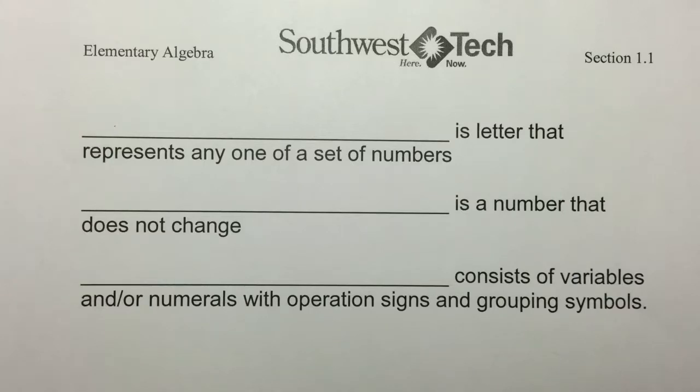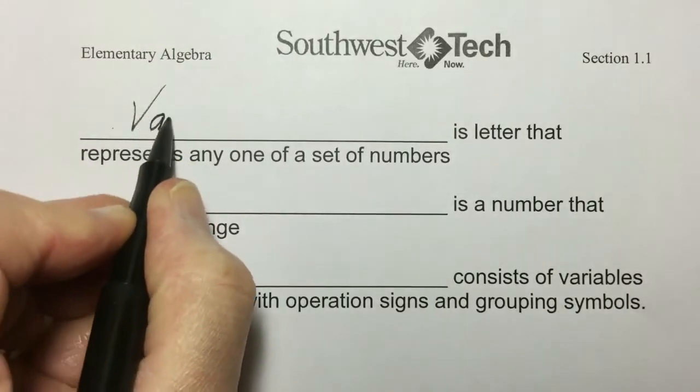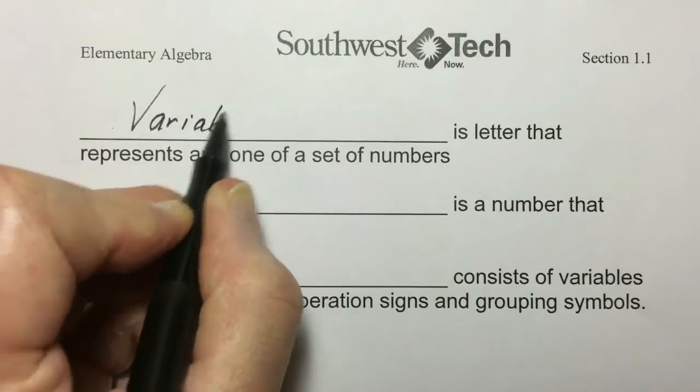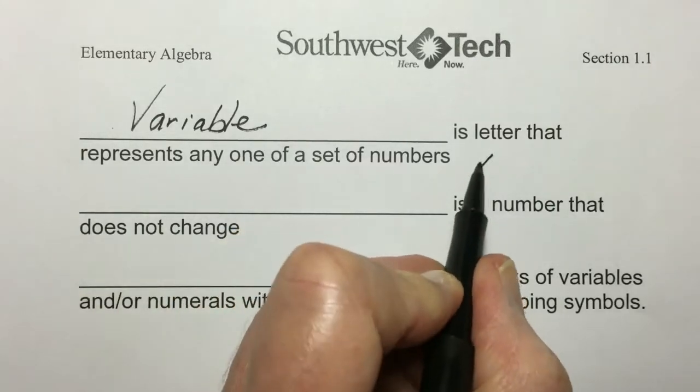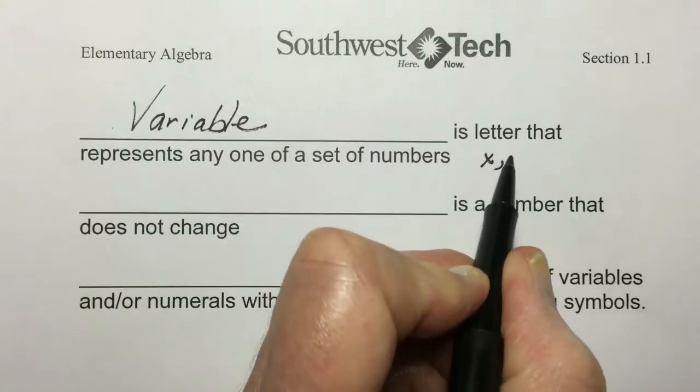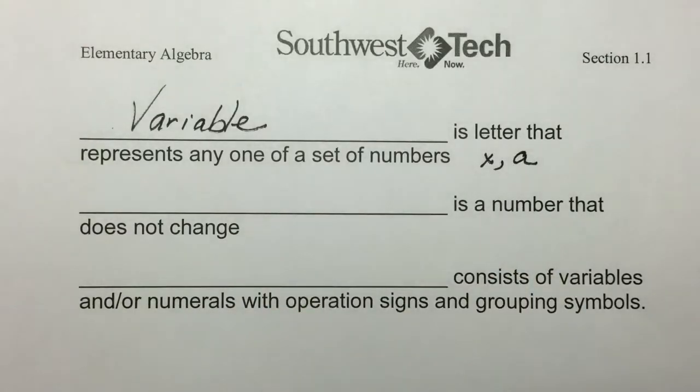Probably the greatest difference between arithmetic and algebra is the use of variables. A variable is a letter that represents any one of a set of numbers, and we could let x represent our variable, or a, or any other letter or symbol.